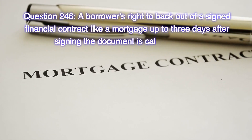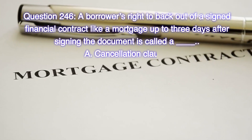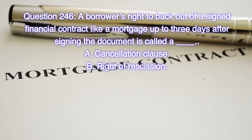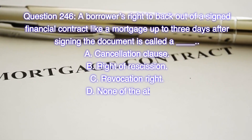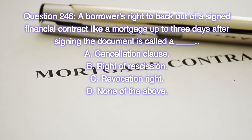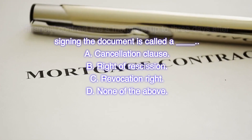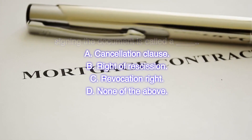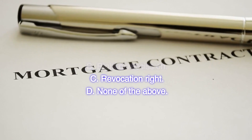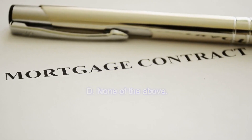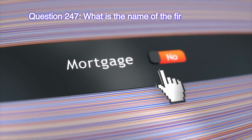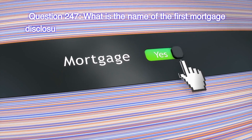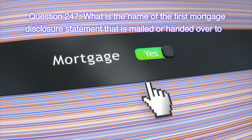Question 246: A borrower's right to back out of a signed financial contract like a mortgage, up to three days after signing the document, is called: A) Cancellation Clause, B) Right of Rescission, C) Revocation Right, D) None of the above. Correct answer is B, Right of Rescission.